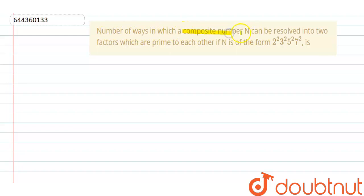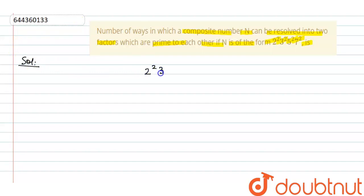The question asks: in how many ways can a composite number n be resolved into two factors which are co-prime to each other, if n is of the form 2² × 3² × 5² × 7²? Let all of these equal n. We know 2, 3, 5, and 7 are all prime numbers.